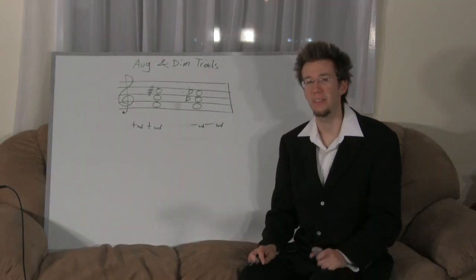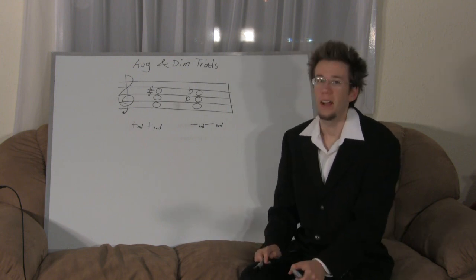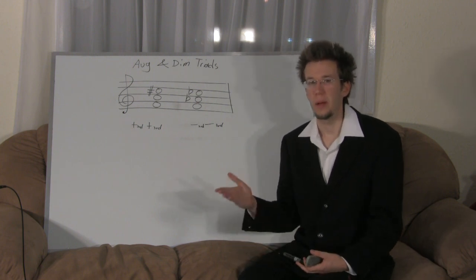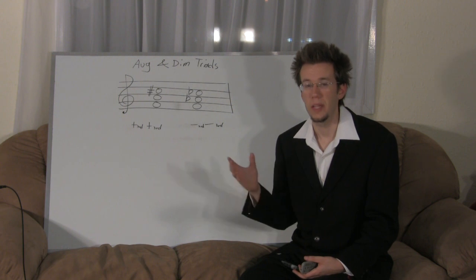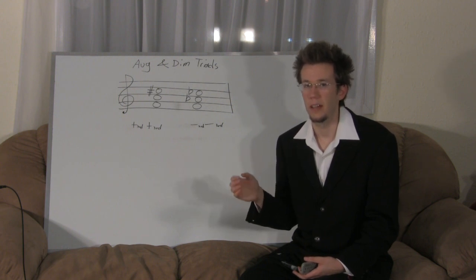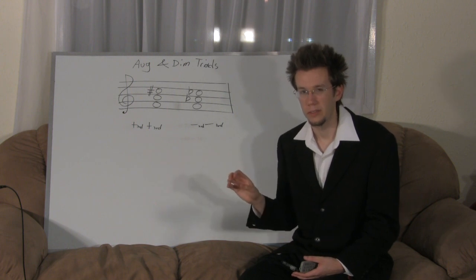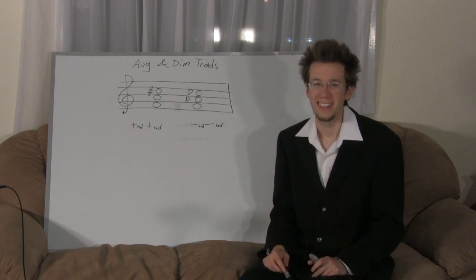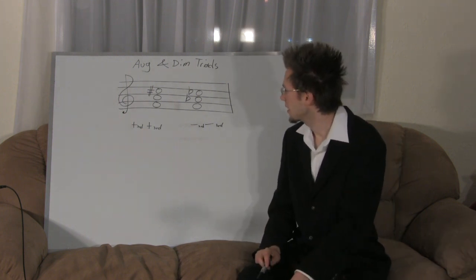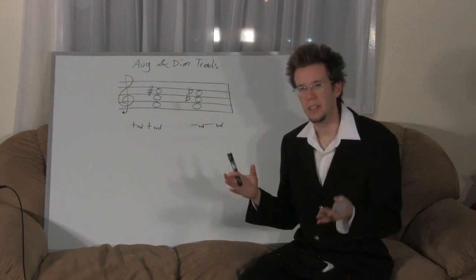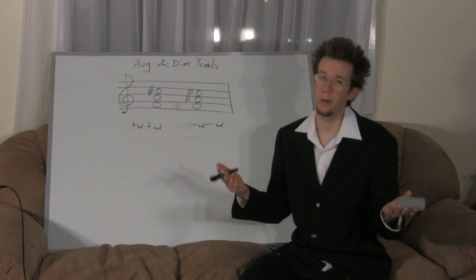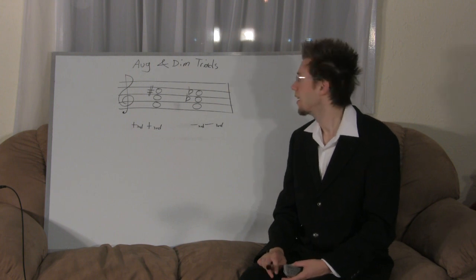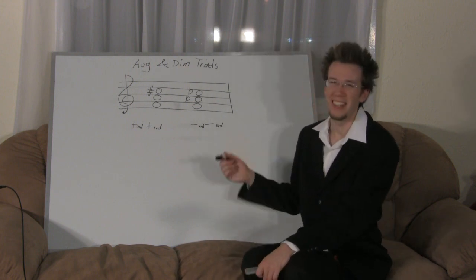The first thing we have is a new concept: augmented and diminished triads. Before, we covered major and minor triads — a major triad is a major third plus a minor third, and a minor triad is a minor third plus a major third. Now we're adding augmented and diminished triads. Augmented means bigger and diminished means smaller.